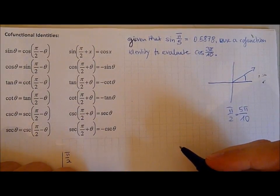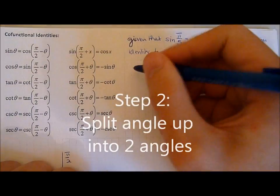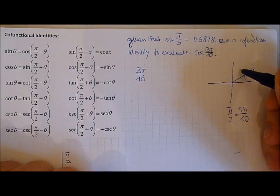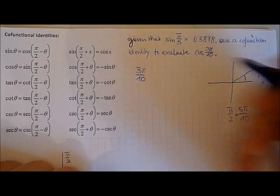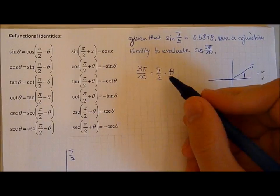Now the second step is to write out the angle. Just the angle. So 3 pi over 10 is equal to 90 degrees which is pi over 2 minus the left over angle.